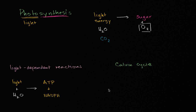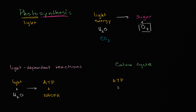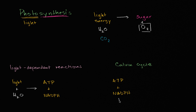Then in the Calvin cycle, we're going to take the products of the light-dependent reactions — our ATP and our NADPH — and we can use their energy in conjunction with some carbon dioxide in order to produce sugar.